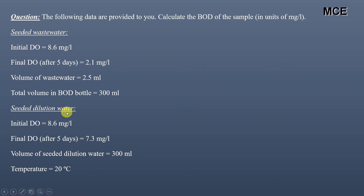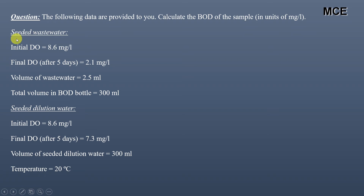For the seeded dilution water: the initial DO is 8.6 mg/L, and the final DO after 5 days incubation is 7.3 mg/L. Volume of seeded dilution water taken is 300 mL, and temperature maintained during the test is 20 degrees centigrade. Note that the seeded waste water data is for the mixture of waste water and seeded dilution water, while the second set of data is for the pure seeded dilution water.